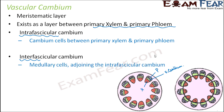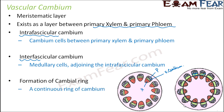Interfascular cambium forms when medullary cells join the intravascular cambium. So the two intravascular cambium regions are joined by these cells, forming a ring-like structure called the interfascular cambium. This results in the formation of the cambium ring — a continuous ring of cambium with nothing discontinuous in between.